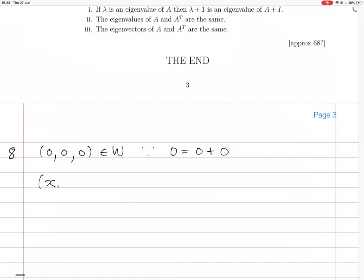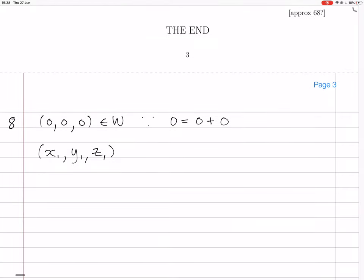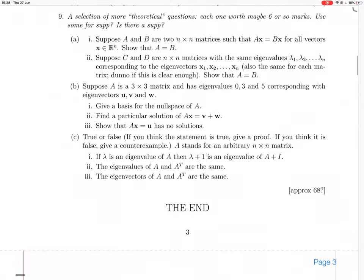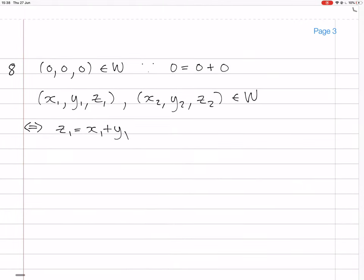Now I take two vectors, X1, Y1, Z1, and X2, Y2, Z2, and assume they're in W. And if they're in W, that means that Z1 equals X1 plus Y1, right? That was the condition, Z equals X plus Y, yes. Third coordinate equals sum of first two coordinates. And Z2 equals X2 plus Y2.